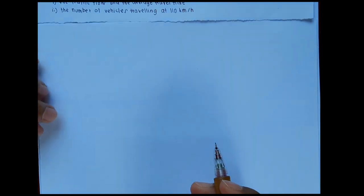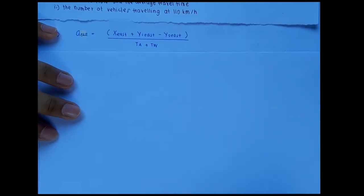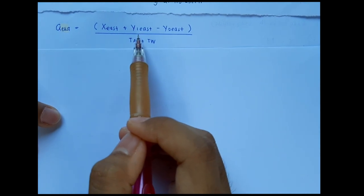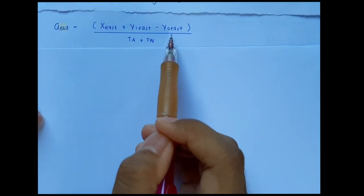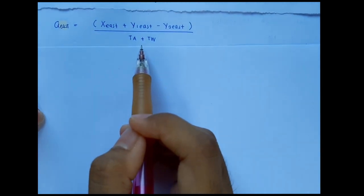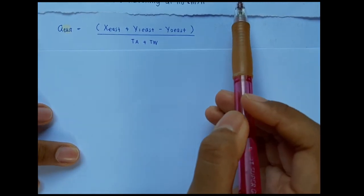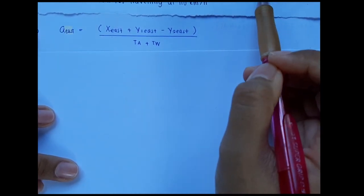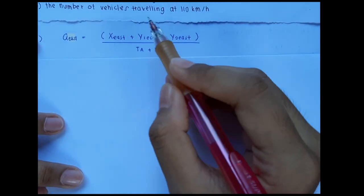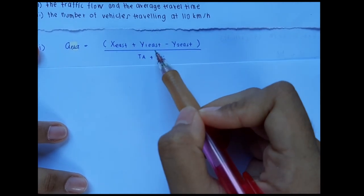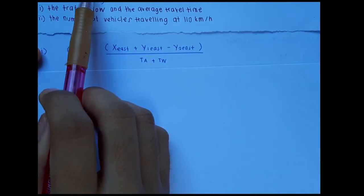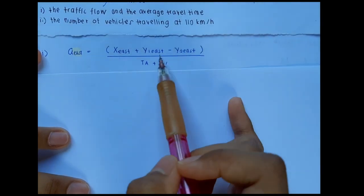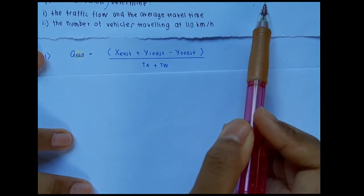The first question is about the traffic flow. The formula for traffic flow is: Q sub E equals X sub E plus Y sub 1E minus Y sub 2E, divided by T sub A plus T sub W. X sub E represents the number of vehicles the test vehicle encountered during the opposite direction, so X sub E is 300 vehicles. Y sub 1E is the number of vehicles that overtook the test vehicle, and Y sub 2E is the number of vehicles that the test vehicle overtook. We assume Y sub 1E minus Y sub 2E equals 18.